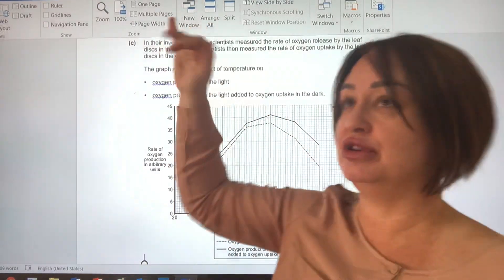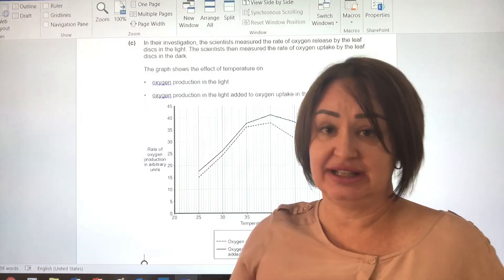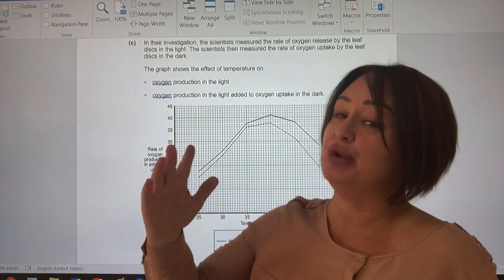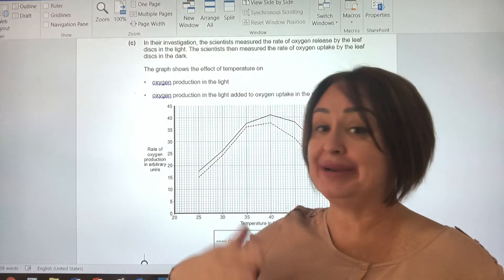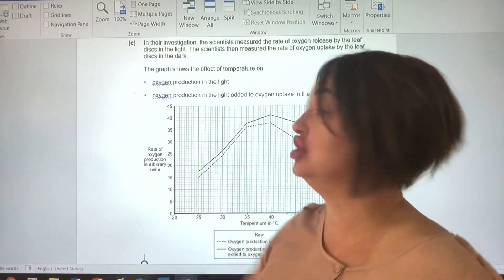Okay, so what do we know already? Well, we know that in the dark, oxygen uptake will happen because of respiration and we know that respiration is also happening in the day, but because you've got photosynthesis, there's a net increase in oxygen.